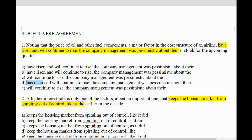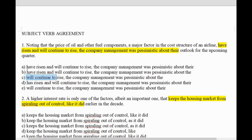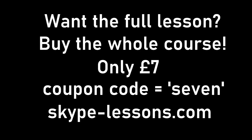The oil hasn't risen, the fuel components haven't risen — just like you say 'the price of cigarettes has risen,' not 'have risen.' You say 'the price of oil and other fuel components has risen' — it's singular, so we need to use 'has risen.' Answer C is still correct: 'the price of oil and other fuel components will continue to rise.' So we can get rid of A and B, but not C or E.